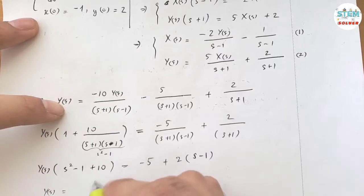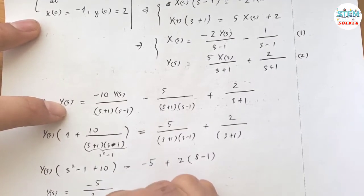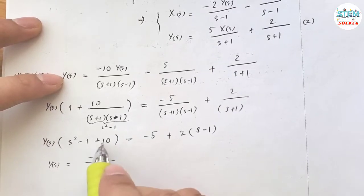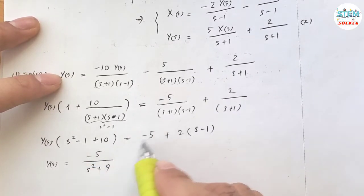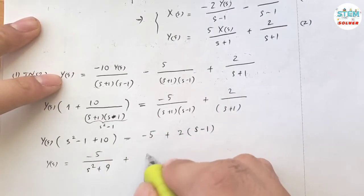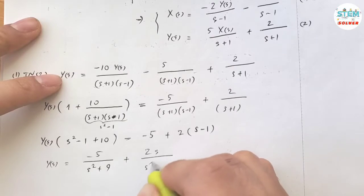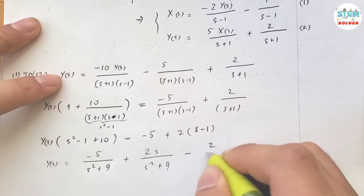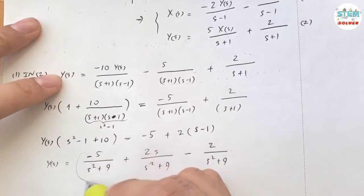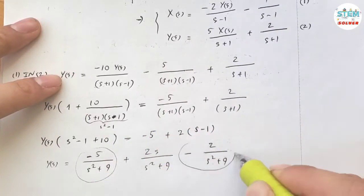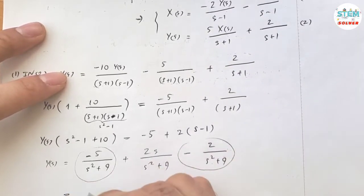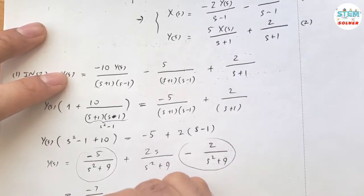The left simplifies to s squared plus 9. The right equals negative 5 plus 2 times (s minus 1). Divide both sides by (s squared plus 9): Y(s) equals negative 5 over (s squared plus 9), plus 2s over (s squared plus 9), minus 2 over (s squared plus 9).